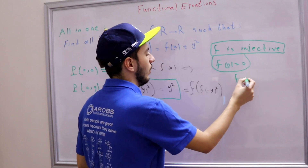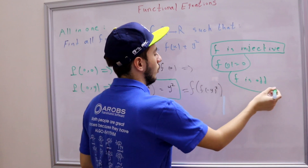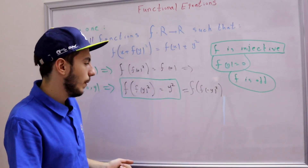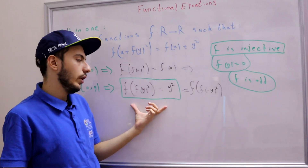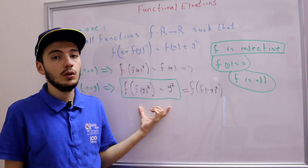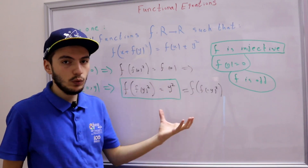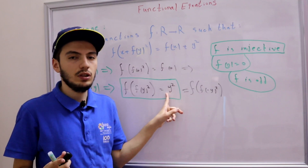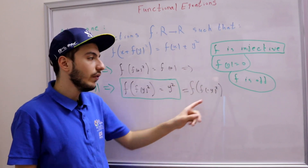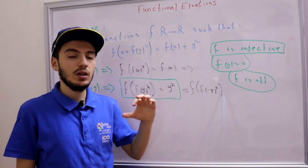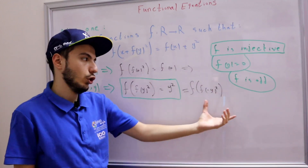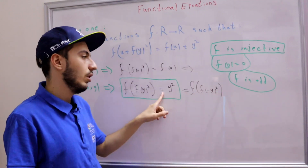So f is odd. Now, from f(f(y²)) = y², f of something equals y², which is a surjective quantity over positive reals. So f covers all positive real numbers. But since f is odd, f must also cover the negative values. That means f covers all real numbers, so f is surjective.